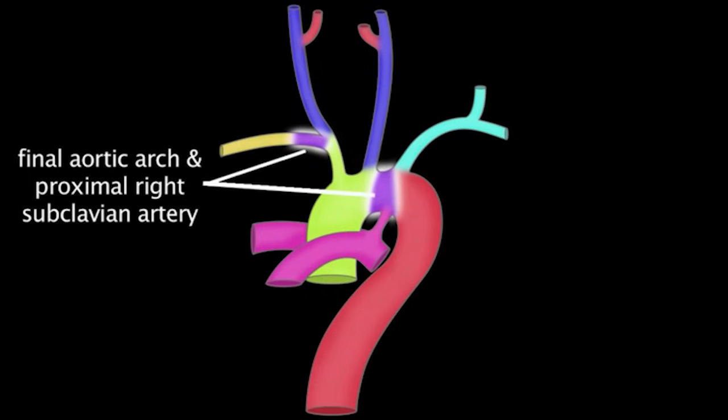The fourth aortic arch forms part of the final aortic arch as well as the proximal portion of the right subclavian artery.